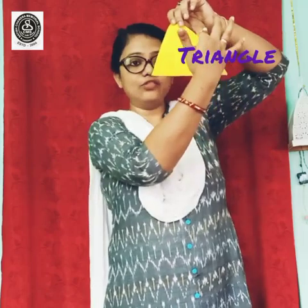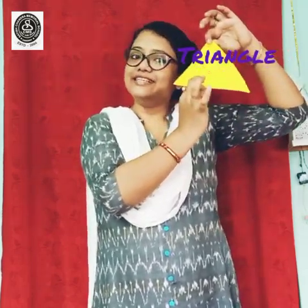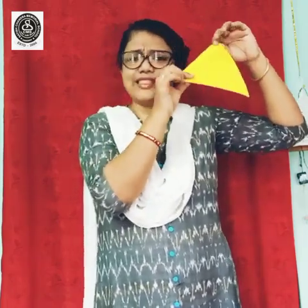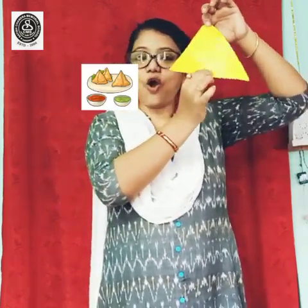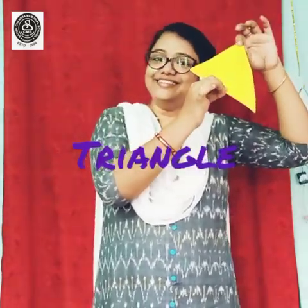Kids, do you relate some foods with this shape? Yes — pizza, a piece of watermelon, and samosa. These all are triangles. So what is the name of the shape? Triangle! Yes, kids.